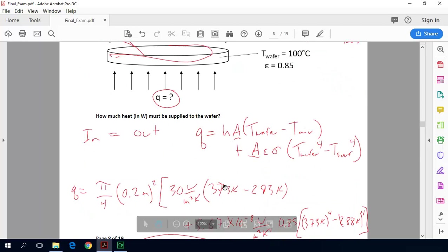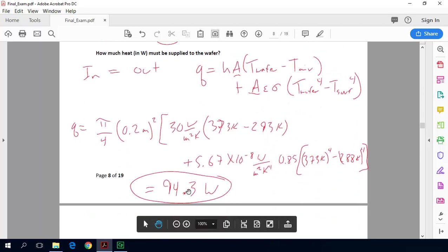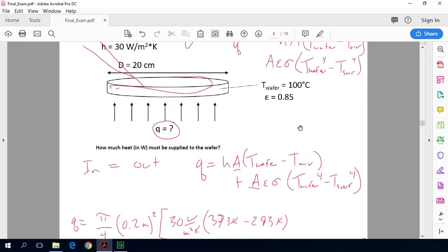But making those simplifications let us get down to this fairly simple equation telling us that we need to supply 94.3 watts of heat to the wafer in order to maintain it at 100 degrees Celsius.